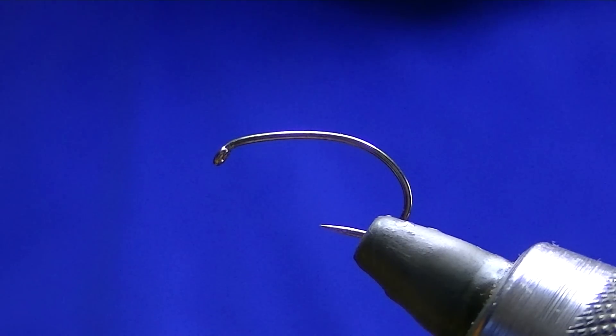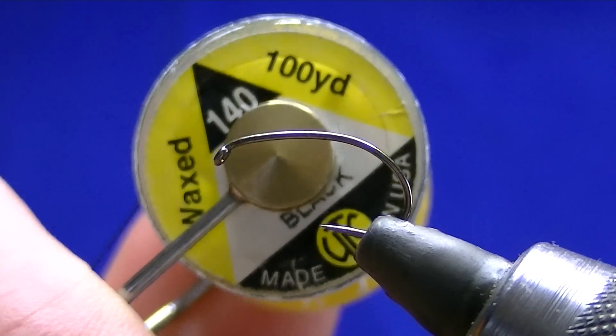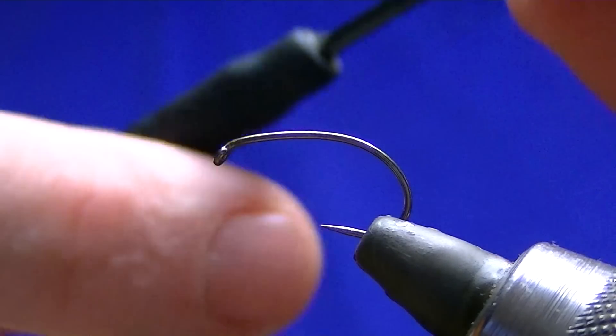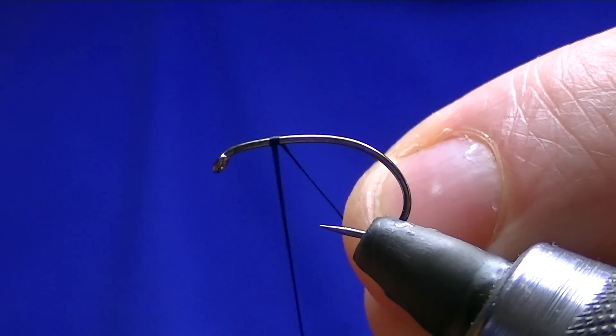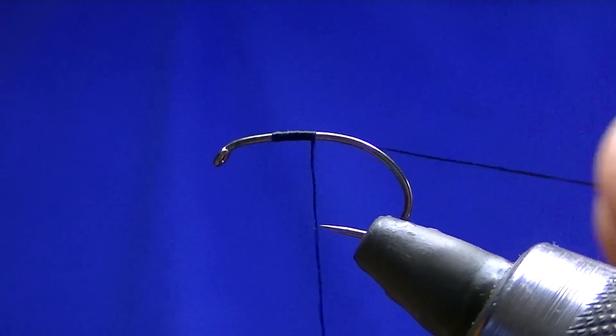I'm tying a buzzer here, just a strip quill buzzer. I'm going to use UTC 140 black for the body. We've got a B110 style hook, a barbless hook that I've got from Japan. I'm trying them out.